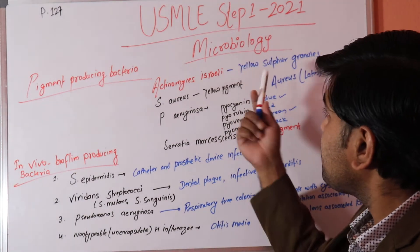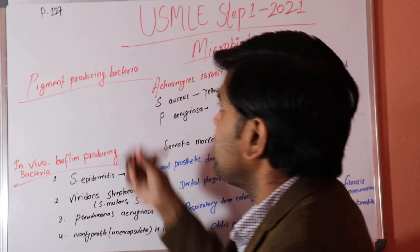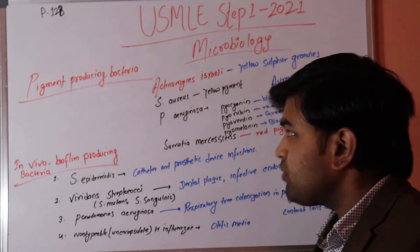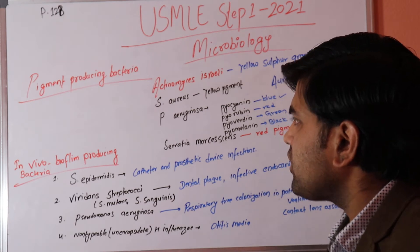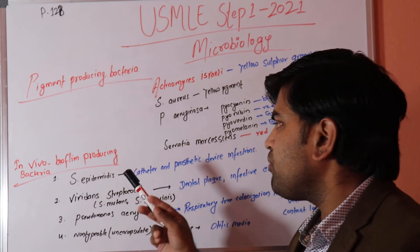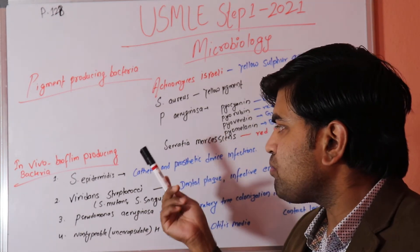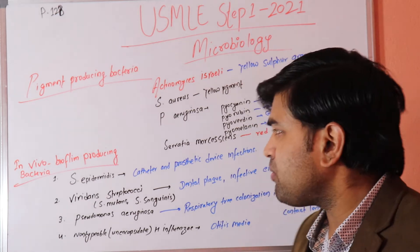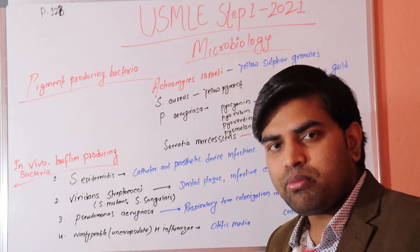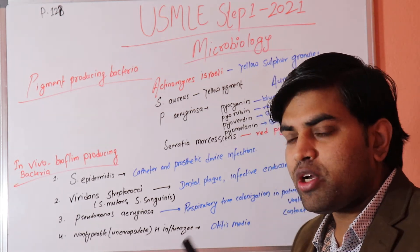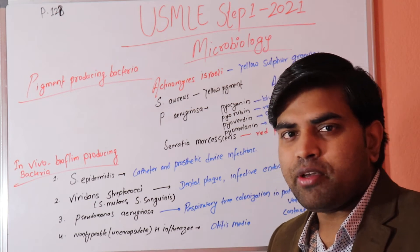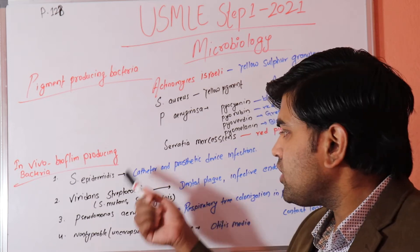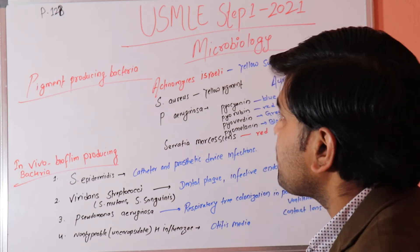Hello and welcome. Today we will be discussing USMLE Step 1 2021, the microbiological section. We will cover two important topics: pigment-producing bacteria and in-vivo biofilm-producing bacteria. Pigmentation is useful as primary identifying information, but biofilm is one of the most important clinical problems worldwide, especially in ICU patients with catheters and in cases of endocarditis.